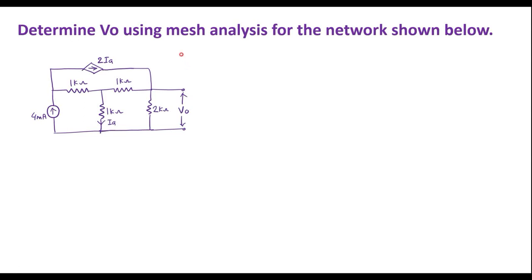Let's take one example on mesh analysis. Determine VO using mesh analysis for the network shown below. This is the given circuit; we need to find VO, which is the voltage across the 2 kilo ohm resistor. Here we have three loops and a dependent source — a current-dependent current source 2IA — where IA flows through the 1 kilo ohm resistor, and one independent current source of 4 milliamps.